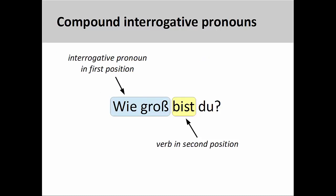We can use any adjective following wie to create a compound interrogative pronoun. Here for example, you see the adjective groß, tall, large, used to inquire about the height of a person. Wie groß bist du? How tall are you?